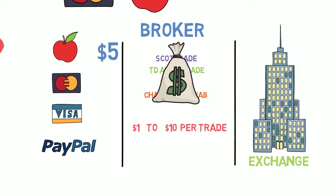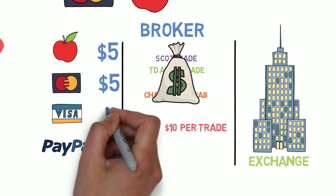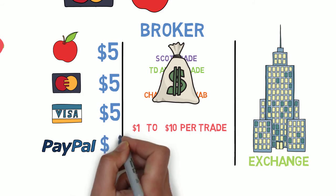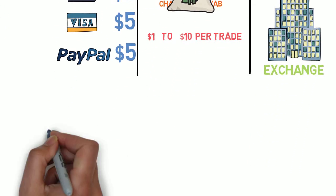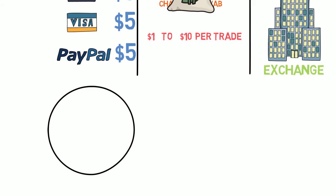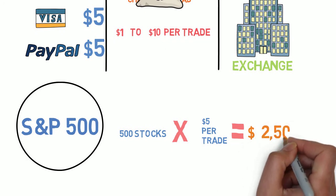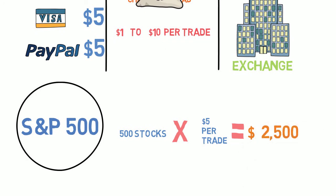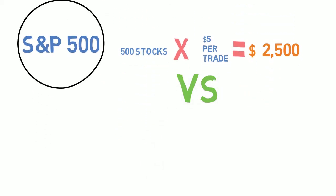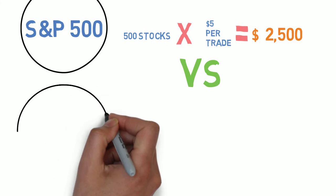A couple of brokers are listed here, and of course they charge a fee to offer that connection to the exchange — most charging $1 to $10 per trade for each individual stock purchase. So if it's $5 a trade, and we take the S&P 500 which is an index of 500 different companies, you'd multiply 500 stocks by $5 per trade, bringing you to $2,500 — not to mention having to invest in 500 companies individually, which would take quite a bit of time.